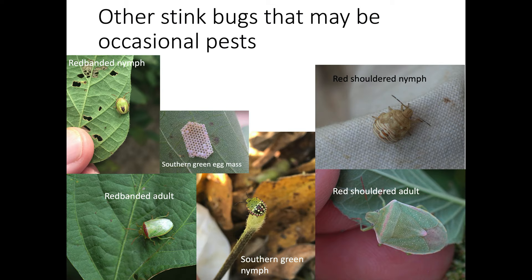Other plant-feeding species that may be present in Tennessee soybeans include the red-shouldered stink bug and the dusky brown stink bug. The southern green stink bug is less common but may be found after warm winters, particularly in the southernmost counties. The red-banded stink bug is an invasive species that may be observed in some areas of the state and, like the southern green stink bug, is more likely after a very mild winter. It is important to correctly identify stink bug species because some are more difficult to control with insecticides than others.